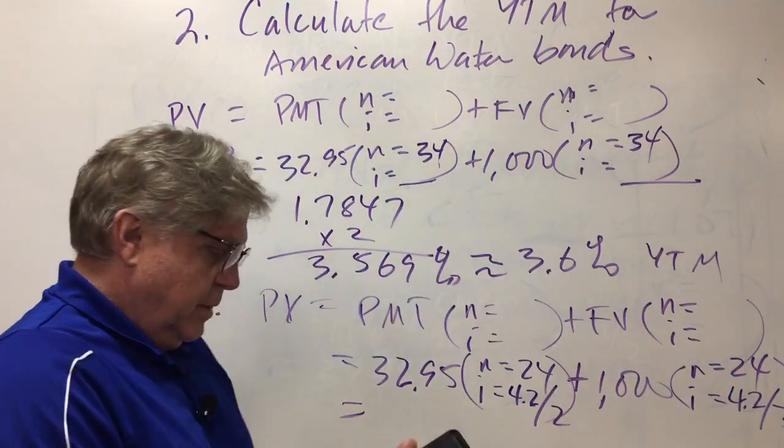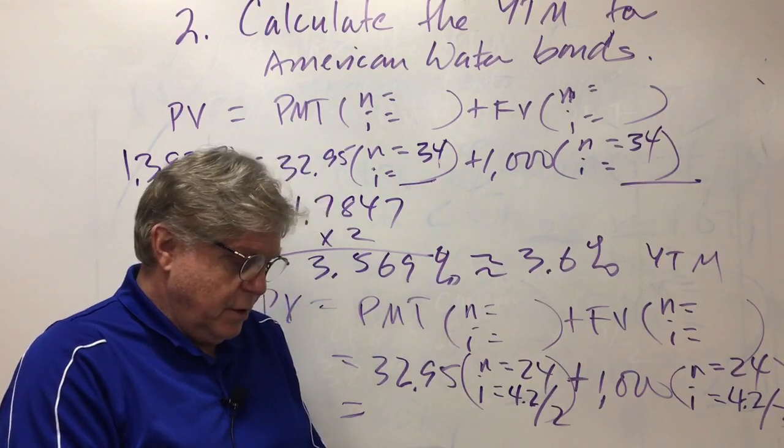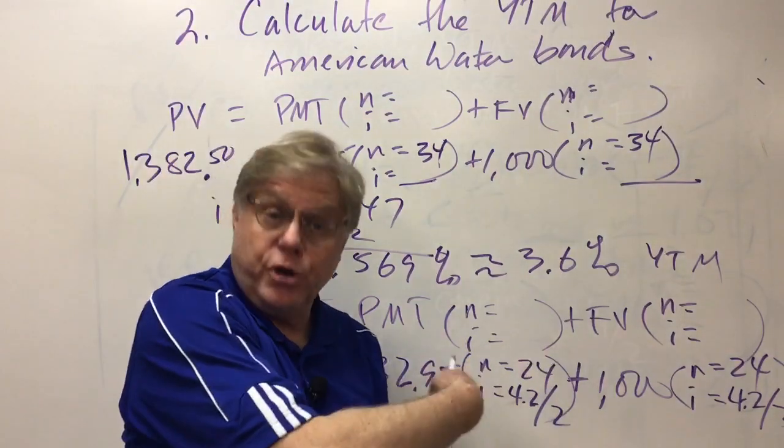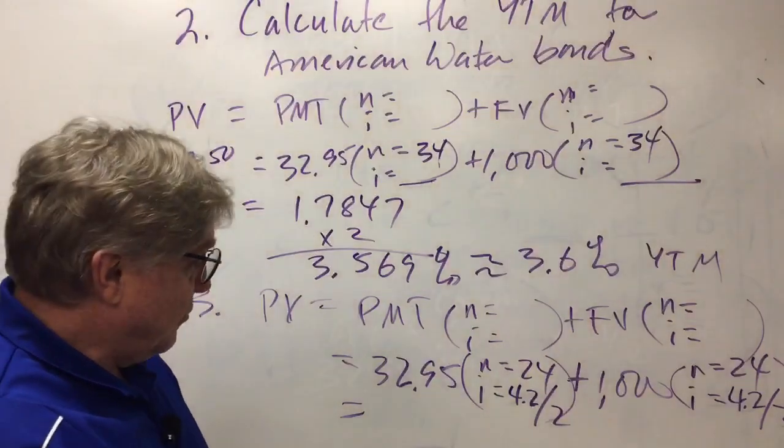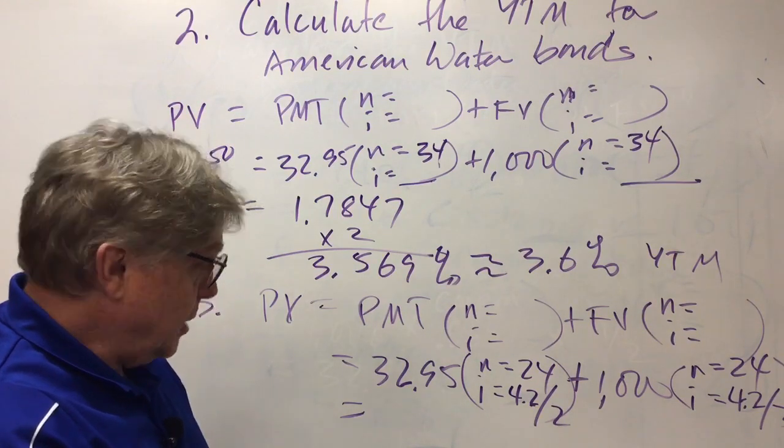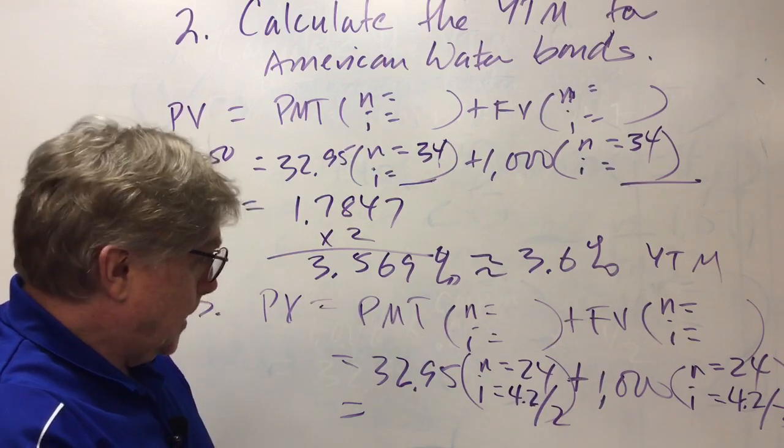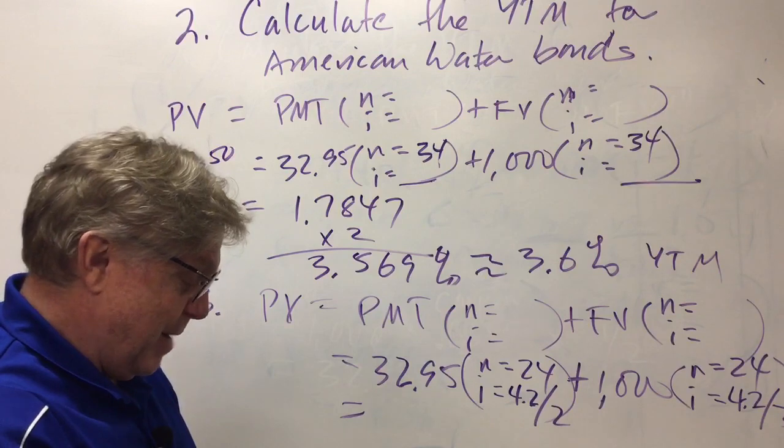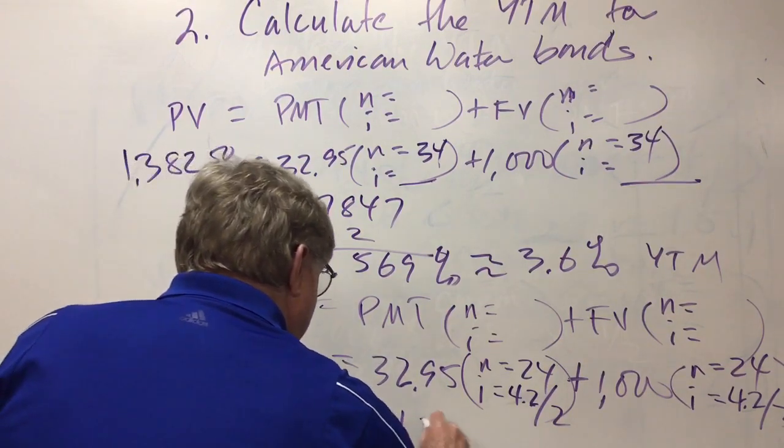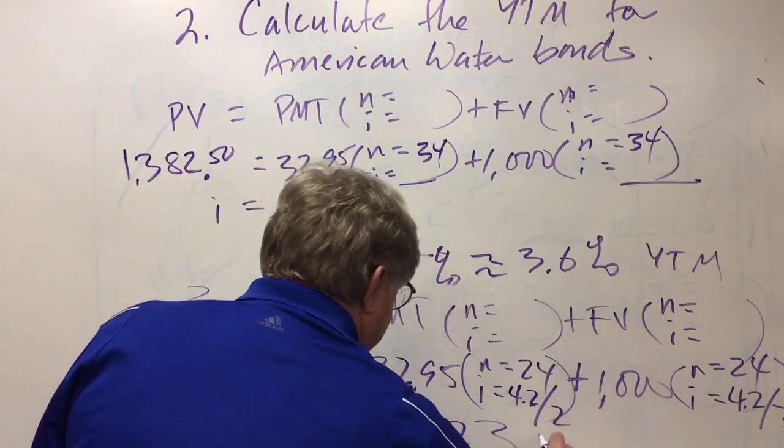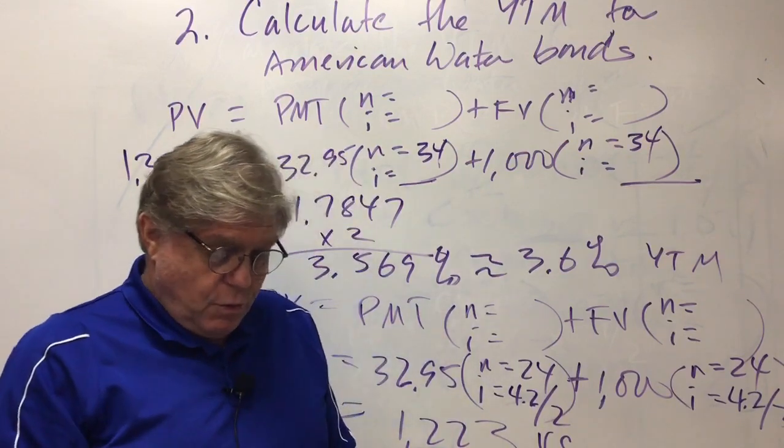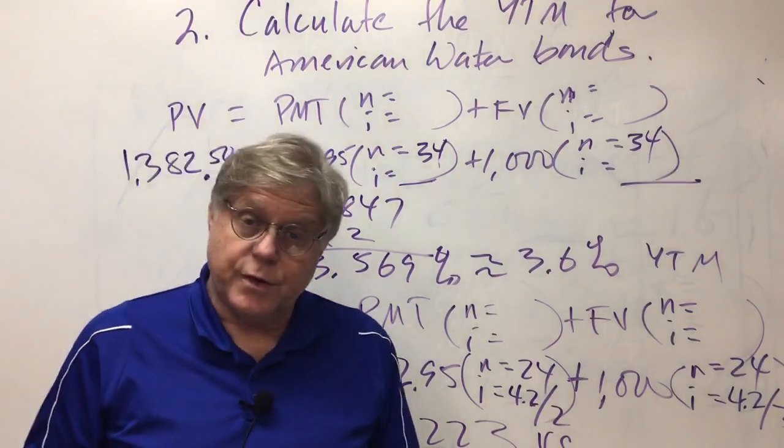Let's see what the value of that bond would be given this information. I'm going to put in $1,000 as the future value. It doesn't matter in what order you input these values as long as you put them all in correctly before you ask the calculator to solve for present value. $32.95 is the payment, 24 is n, 4.2 divided by 2, I guess I could figure that in my head, 2.1 percent is i. Compute present value. We get a value of $1,223.48. That's what it rounds to. The question is, at what price would the bonds be trading at that time? The answer is $1,223.